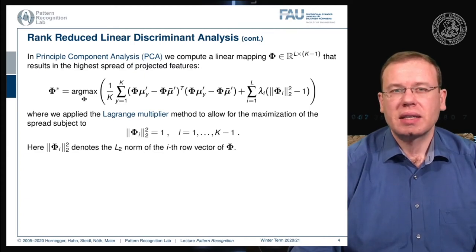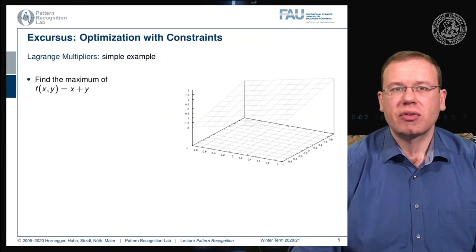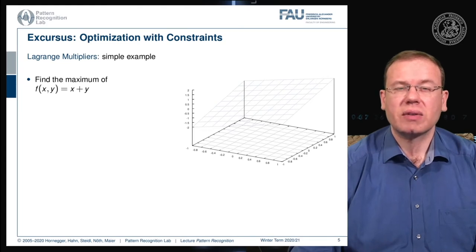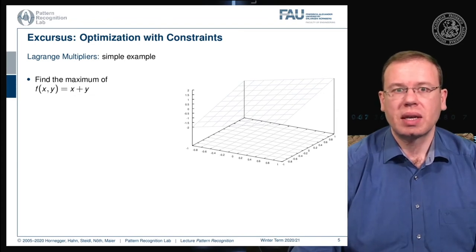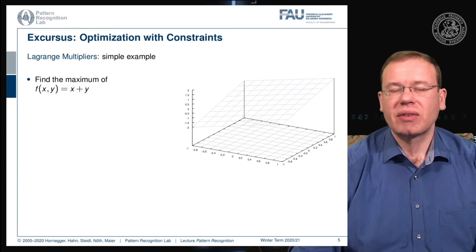In case you forgot about Lagrangian multipliers, here is a short refresher. Generally, this is a method to include constraints into optimization, and we will use this technique quite frequently for the rest of this class. As a simple example, consider the function x plus y — this is not a bounded function, so maximizing it would simply send x or y towards infinity.